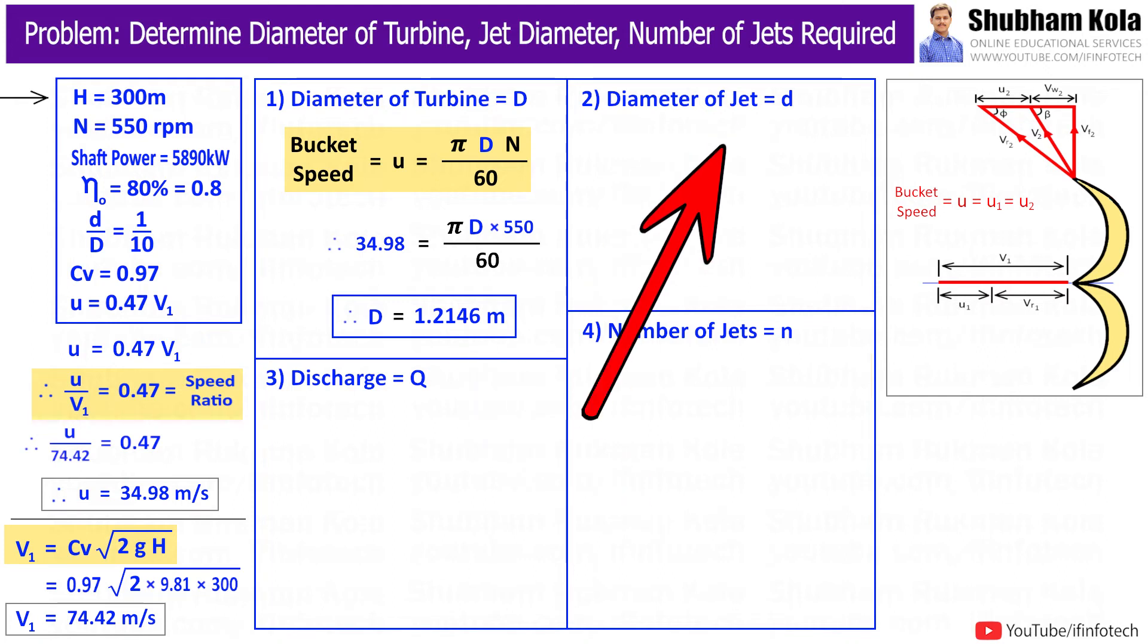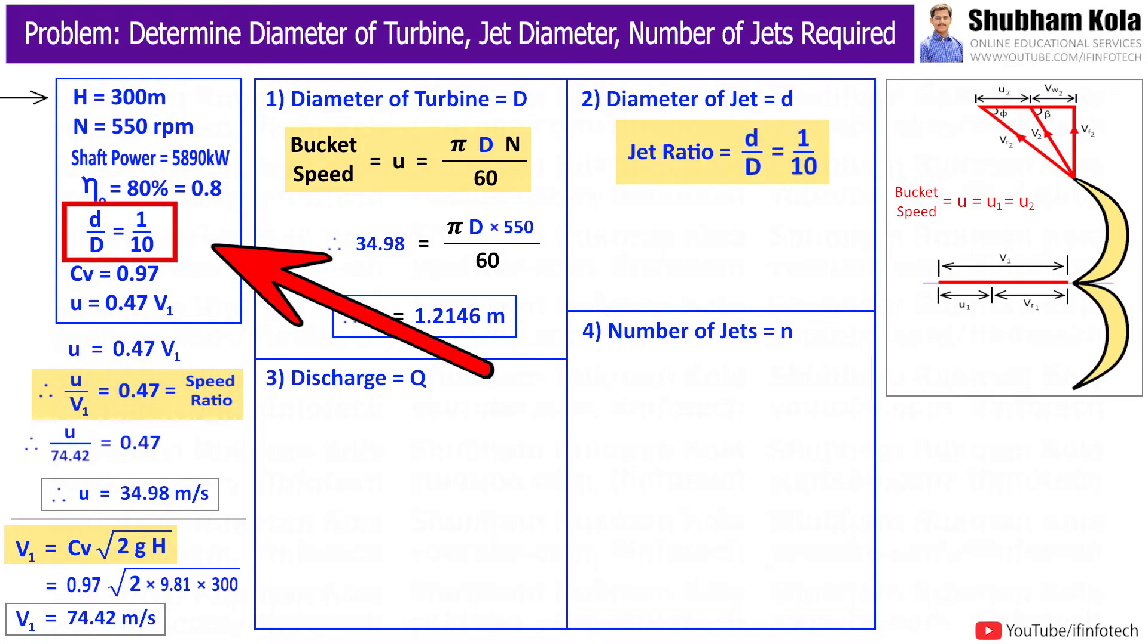Next, we want to calculate diameter of jet, small d. In the problem, they have mentioned that ratio of small d to capital D is given as 1 to 10.